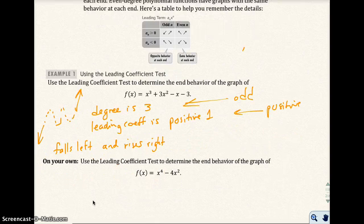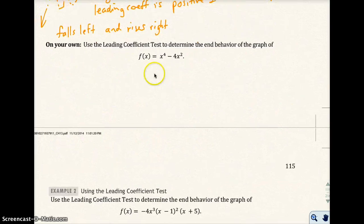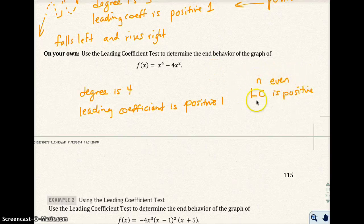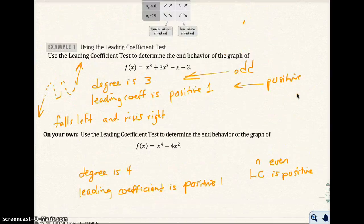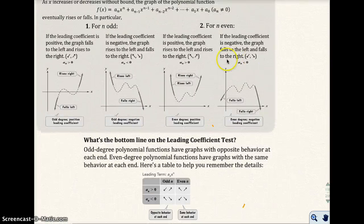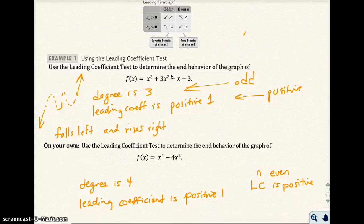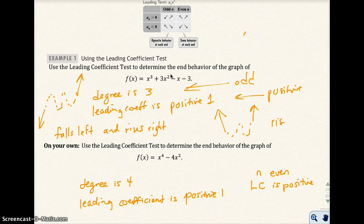For the on-your-own problem: the degree is 4, which is even, and the leading coefficient is positive 1. Going back to the chart — n is even, leading coefficient is positive — so we have a graph that rises left and rises right.